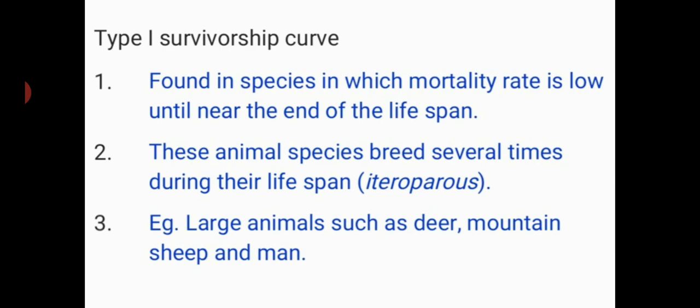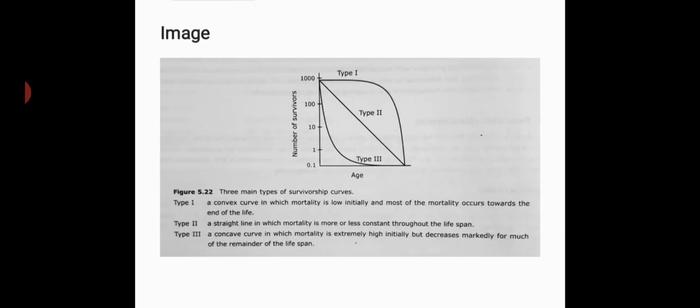Type 1 survivorship curve is a highly convex curve. It is found in those species where the mortality rate is low until near the end of the life span. These organisms breed several times during the course of their life span, a strategy known as iteroparous. Large animals like deer, mountain sheep, and humans show this type of curve.